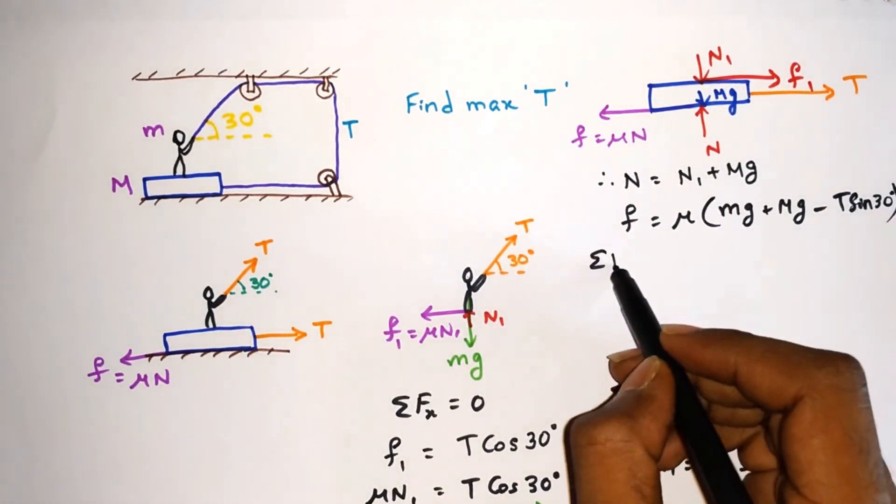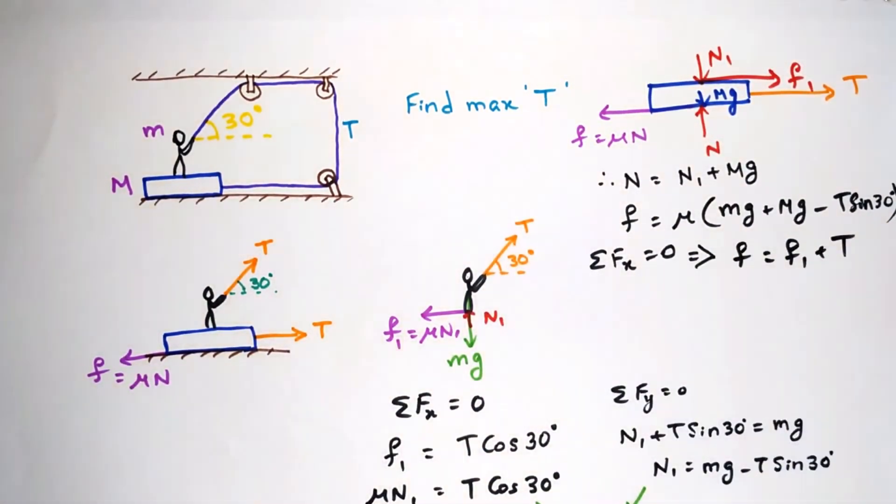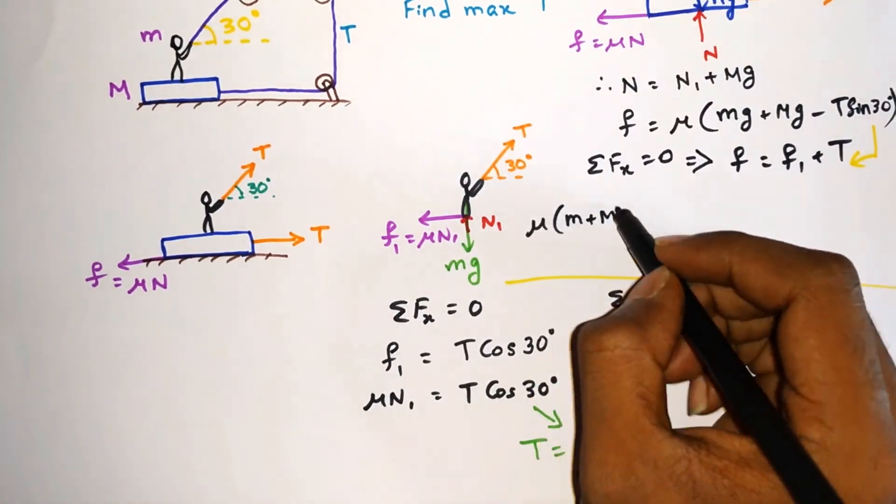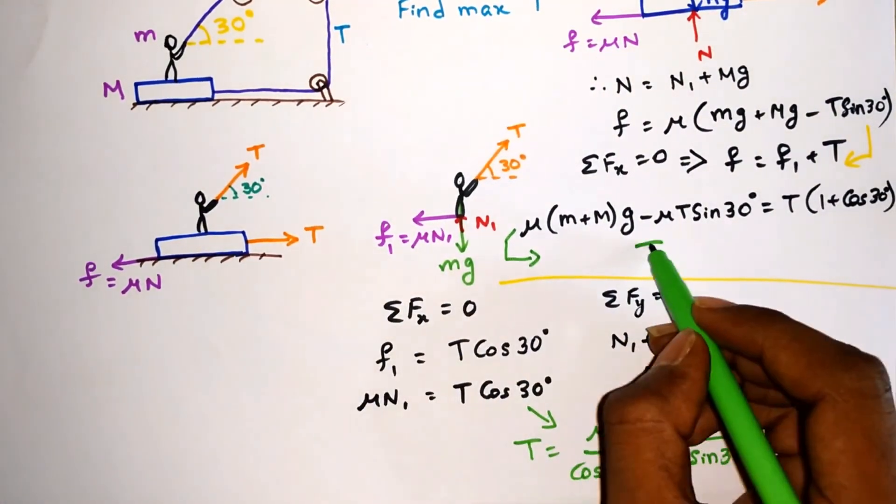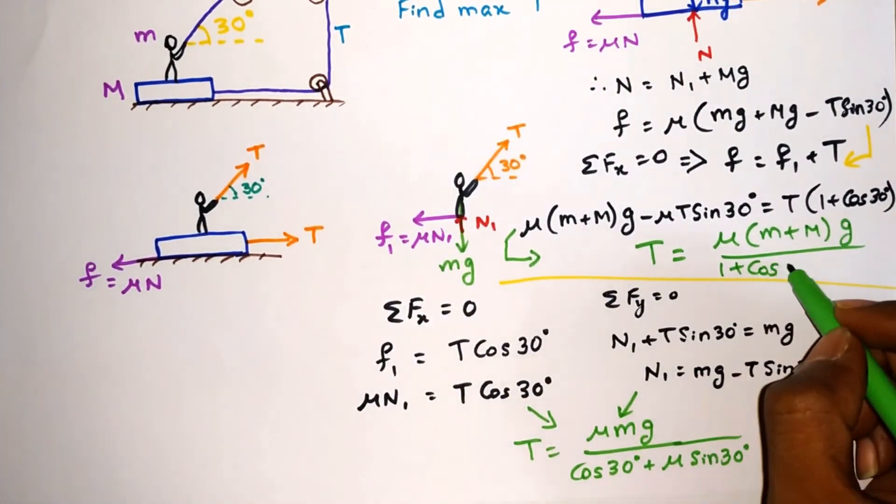Consider ΣFx = 0 which is F = F1 + T. Substitute the value of F and put F1 = Tcos30°. Then we can solve for T as follows. This equation gives the maximum tension for the block to remain stationary.